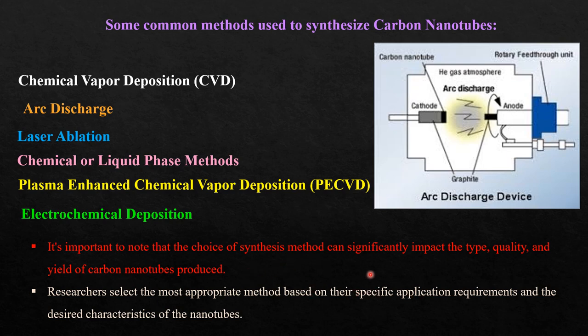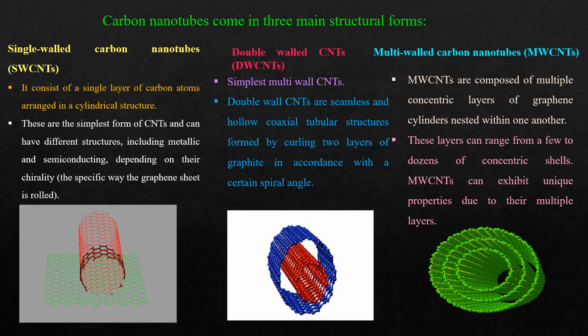It is very important to note that the choice of synthesis methods can significantly impact the type, quality and yield of the carbon nanotubes which are produced. That is the reason researchers select the most appropriate method based on their specific applications, requirements and the desired characteristics of the nanotubes.